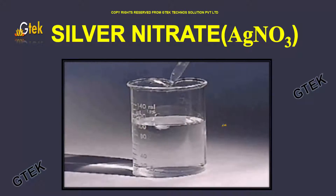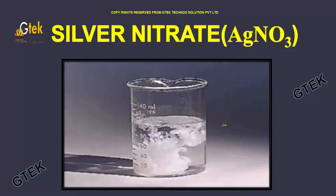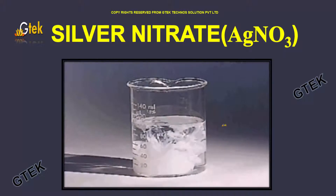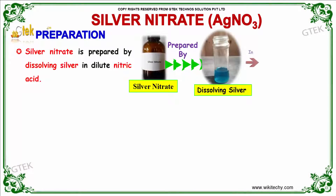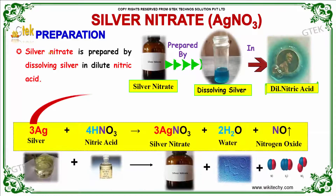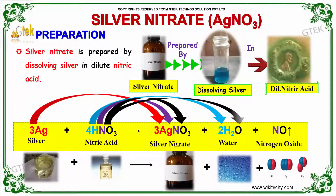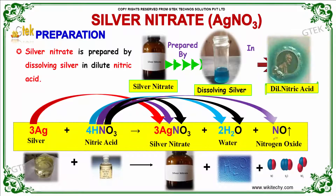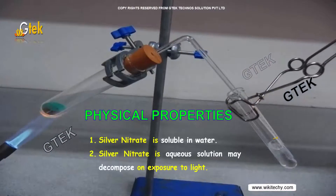Silver nitrate is one of the most important compounds used in the real field. Let's see what are the uses of silver nitrate, what it exactly is, and how it is prepared. Silver nitrate is prepared by dissolving silver in dilute nitric acid. You get silver nitrate along with water and nitrogen oxide as vapor.